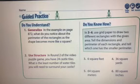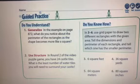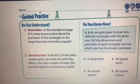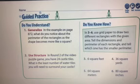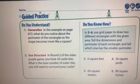In the example on page 872, what do you notice about the perimeter of the rectangle as the shape becomes more like a square? The perimeter was 34, then 20, then 16. The perimeter decreased.